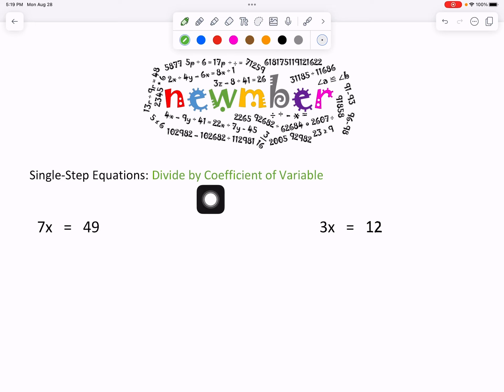The coefficient is the number in front of x. In this case, it's 7.